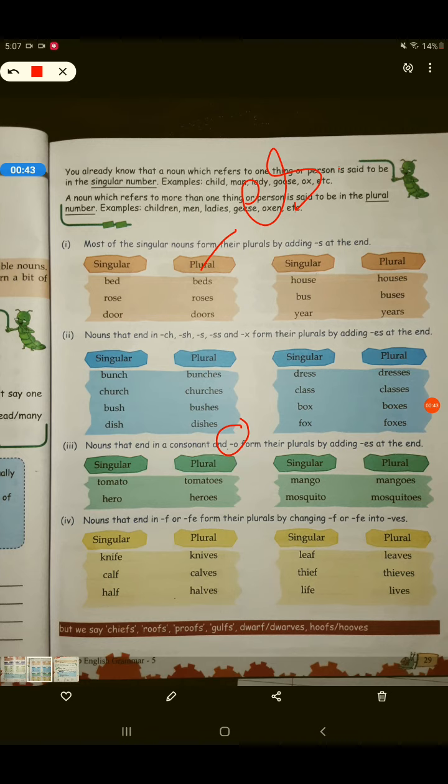जो O में end होता है, उसमें हम ES लगाते हैं. Tomato, tomatoes, hero, heroes, mosquito, mosquitoes,